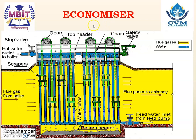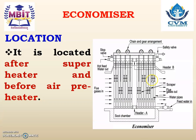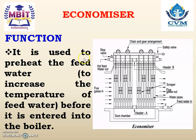This is another figure for the economizer showing the flue gas path as well as the water path. The blue line indicates the water path — water enters from the bottom, moves up, and goes out from the left-hand side top. The yellow region shows the flue gas path. Location: It is located after the superheater and before the air preheater. Function: It is used to preheat the feed water before it is entered into the boiler, to increase the temperature of feed water, and due to that the requirement of heat in the boiler reduces.